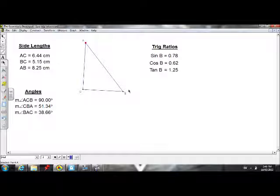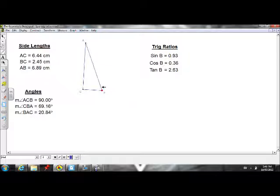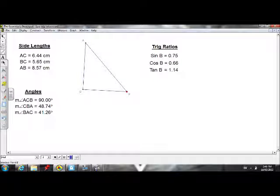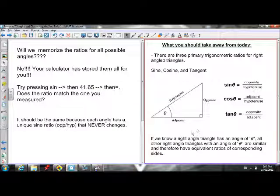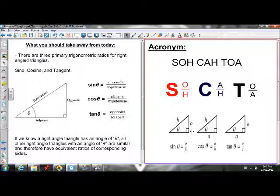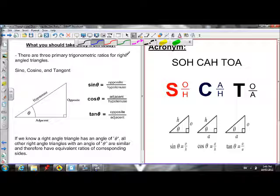Because each angle has its own unique sine, cosine, and tan. But as soon as the angle starts to change, the trig ratios also start to change. Hopefully that helps us understand a little bit how we can use or why we can use these trig ratios. Here's an acronym you can use to help you memorize the trig ratios.